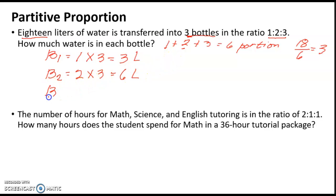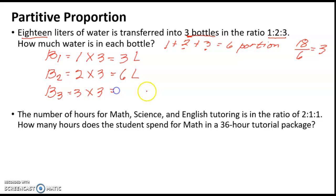For bottle three, the ratio is 3, so 3 times 3 equals 9 liters. So bottle one has 3 liters, bottle two has 6 liters, and bottle three has 9 liters transferred into it.